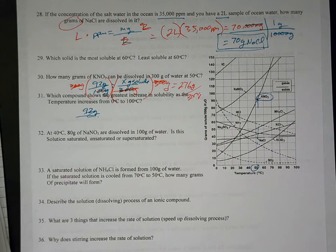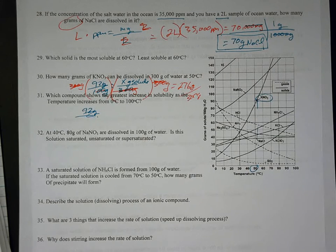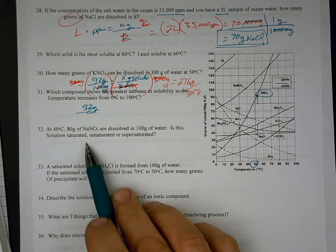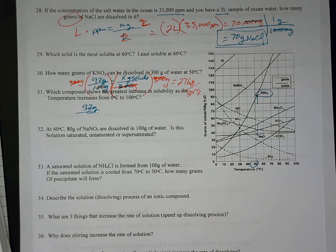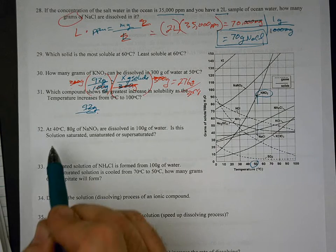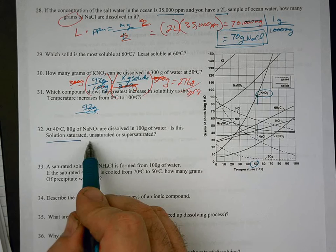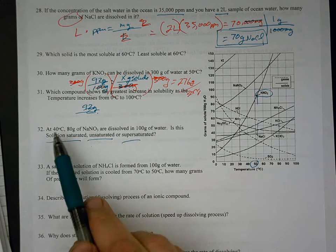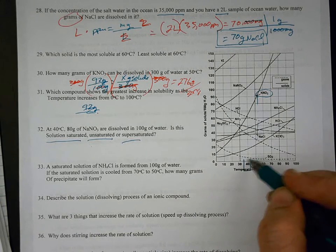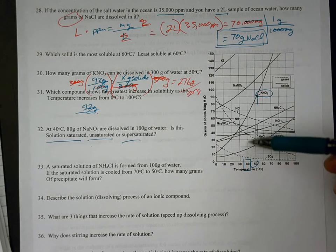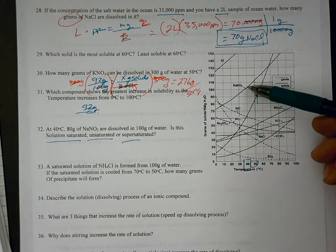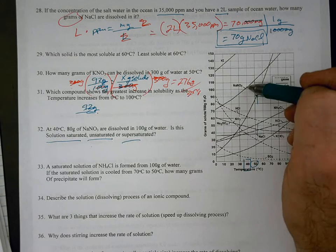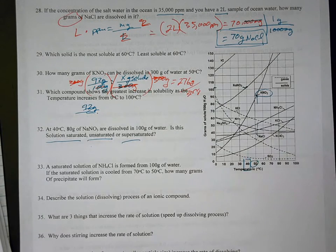And it looks like this would be probably our last question with the time we have left. At 40 degrees, 80 grams of sodium nitrate are dissolved into 100 grams of water. Is this solution going to be saturated? Is it unsaturated, which means it could hold more, or supersaturated? So 40 degrees right here. And we're looking for sodium nitrate. So the solubility of sodium nitrate at 40 degrees looks to me like it's about 102 grams per 100 grams.